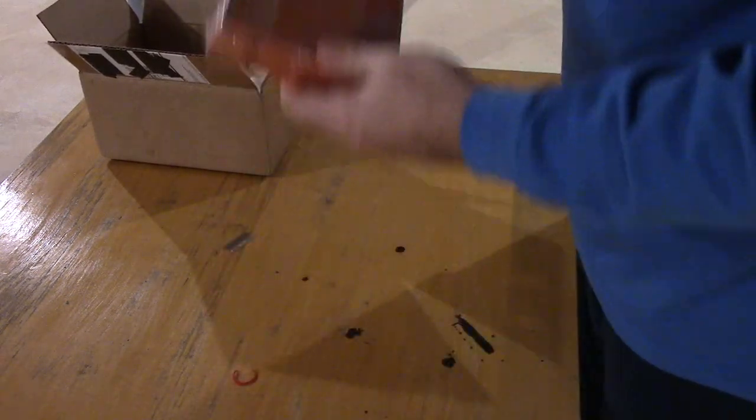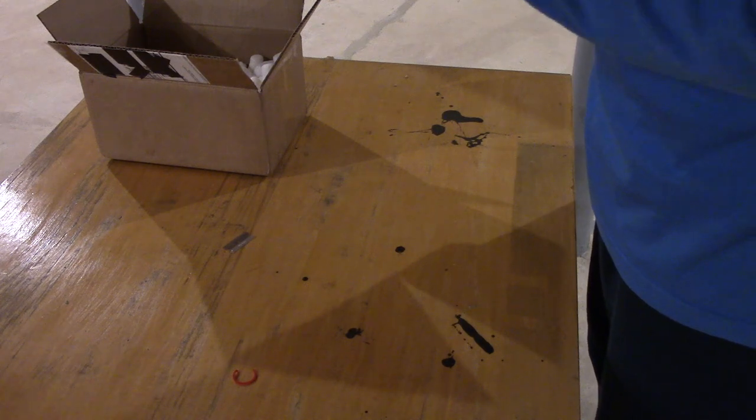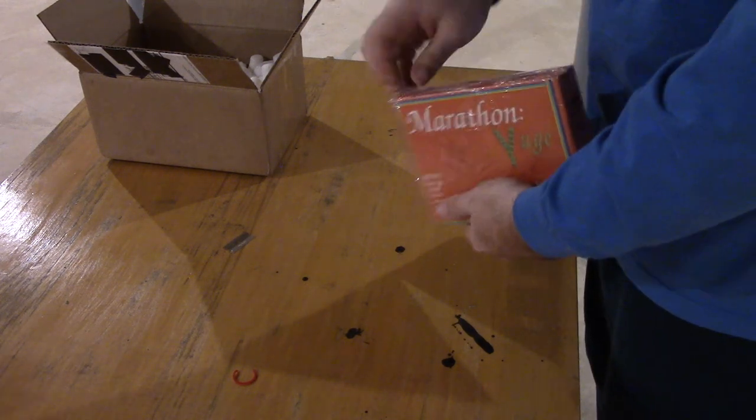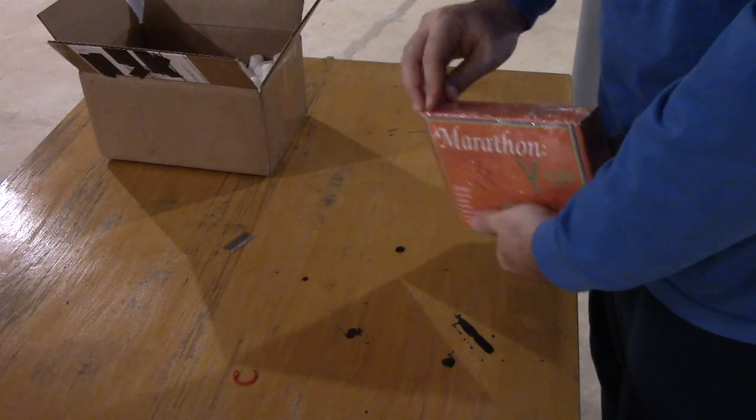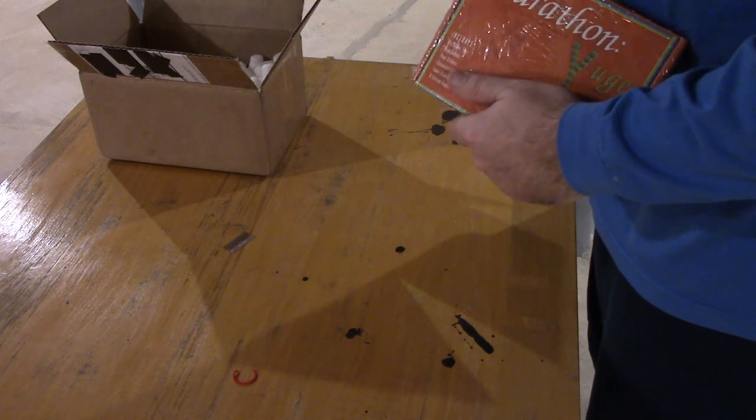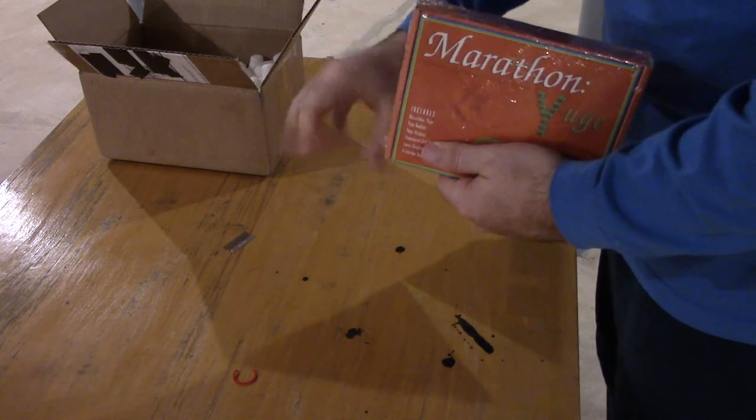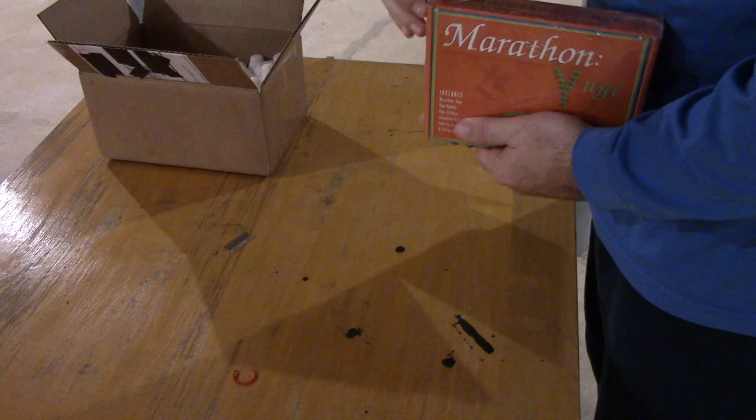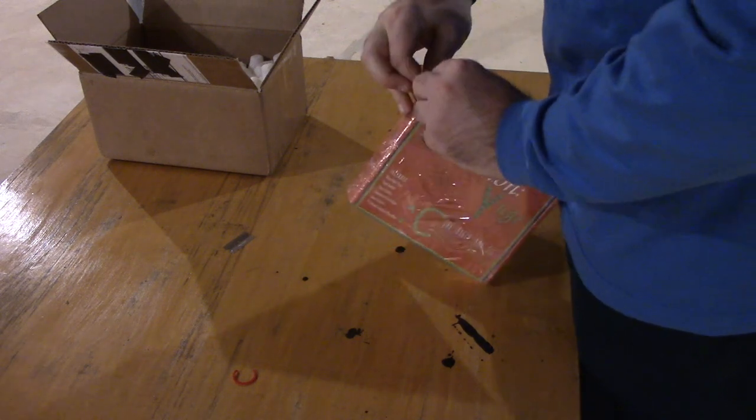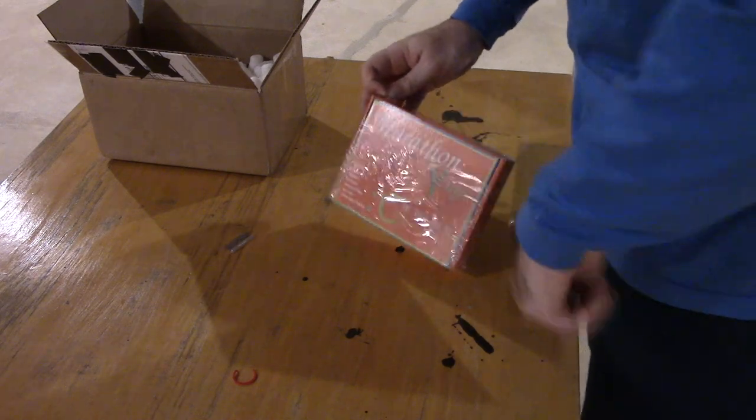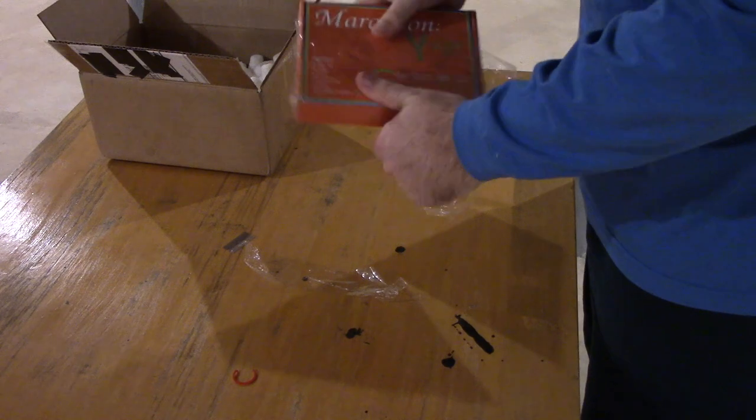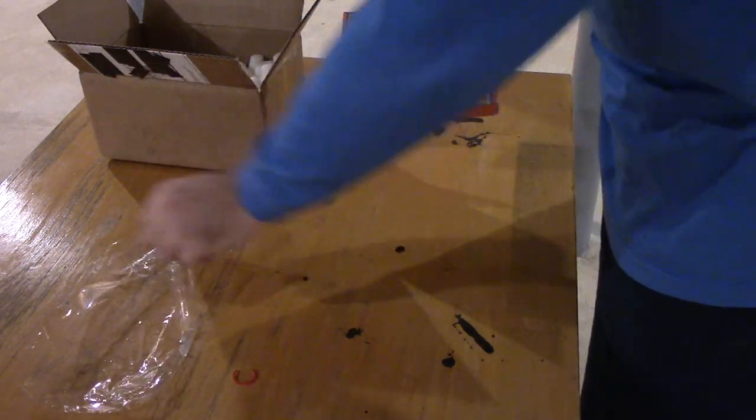So let's see, what else do we have? Anything else in here? I don't believe so, just the flaps of the box. So that's all done with, and we're going to have to get this plastic off as carefully as possible. I really don't want to use the razor blade here if I don't have to because I don't want to damage the box.